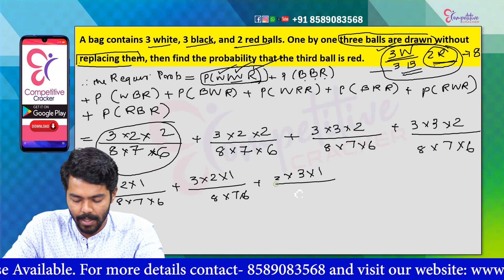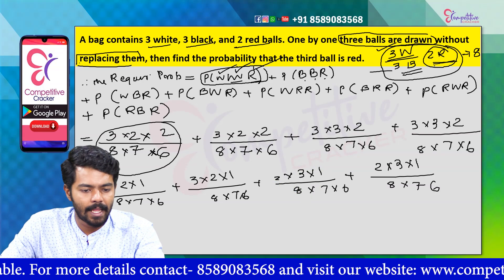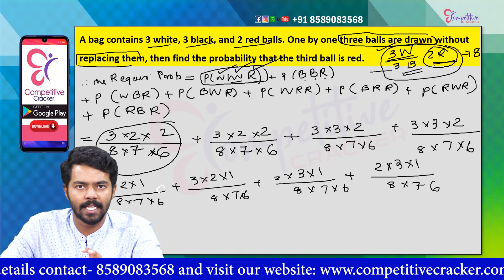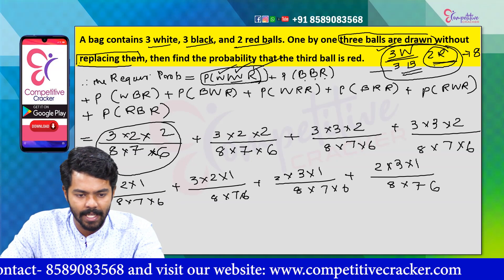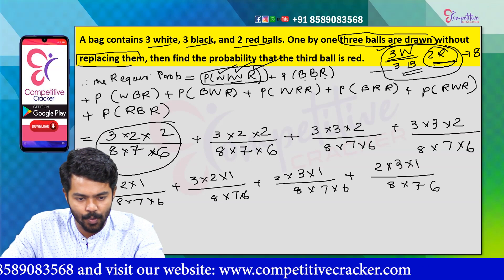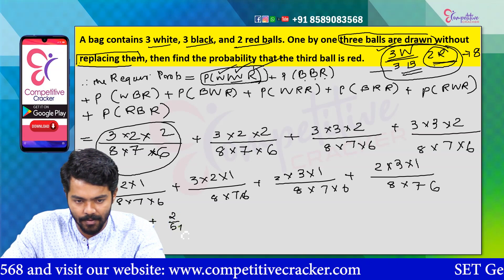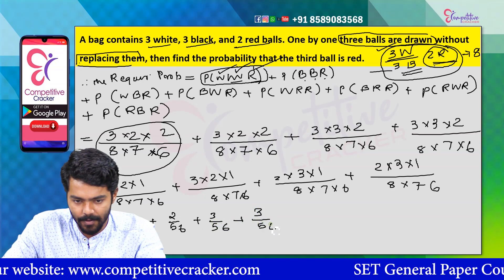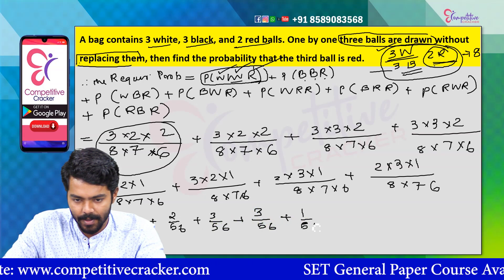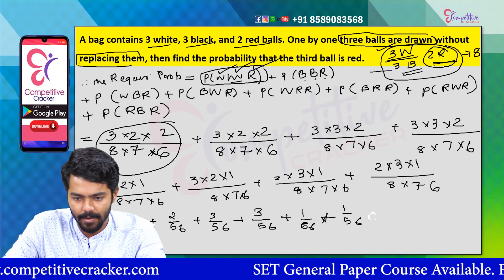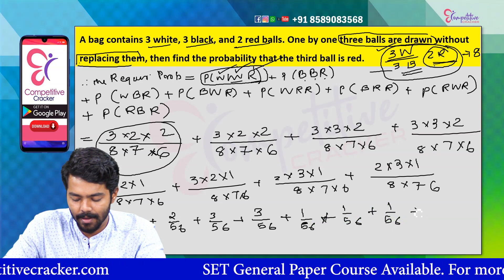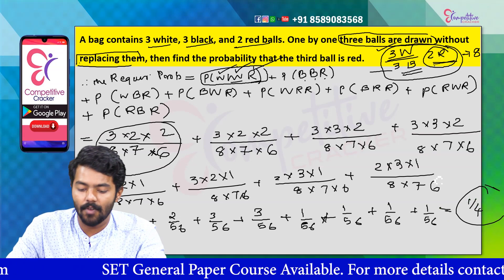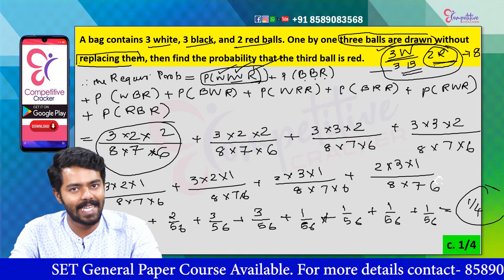Plus 2 into 3 into 1 divided by 8 into 7 into 6. So we can answer: 2 by 56 plus 3 by 56 plus 3 by 56 plus 1 by 56 plus 1 by 56 plus 1 by 56 plus 1 by 56 plus 1 by 56 plus 1 by 56.